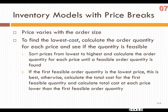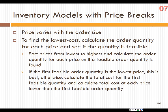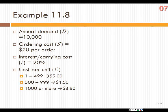We want to find the lowest cost. We calculate the order quantity for each price and determine if that order quantity is feasible. We sort prices from lowest to highest, calculate the order quantity for each price until a feasible order quantity is found. If the first feasible order quantity is the lowest price, that's best. Otherwise, we calculate the total cost for the first feasible quantity and the total cost of each price lower than the first feasible order quantity.